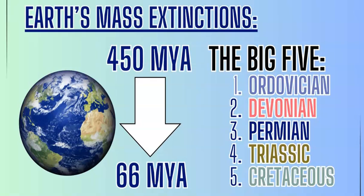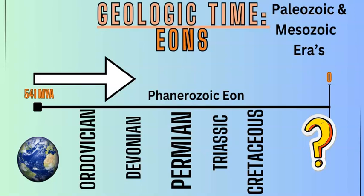So for the past half billion years, the five big extinctions we're going to look at are the Ordovician, Devonian, Permian, Jurassic, and Cretaceous. All five occurred in the Phanerozoic Eon and include both the Paleozoic and Mesozoic eras. There's also a little question mark as to whether we're currently in a sixth mass extinction event caused by humans and our activities on this planet — though that is still in question.